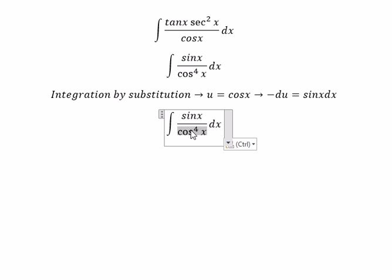So this one, we change to u to the power of 4. Sine x dx, we change for negative du.